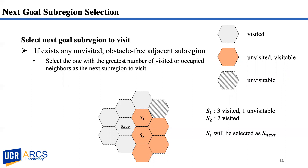For instance, in the figure, green cells are already visited. Orange cells are unvisited and visitable. The cells with a slash pattern contain obstacles. S1 and S2 are unvisited, obstacle-free subregions adjacent to the robot's current position. S1 has four visited or occupied neighbors, whereas S2 has two visited neighbors. Hence, S1 will be selected as the next subregion.